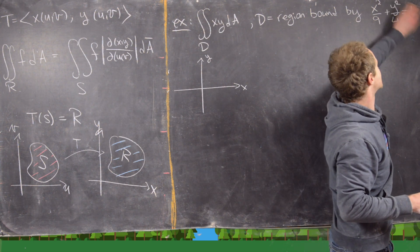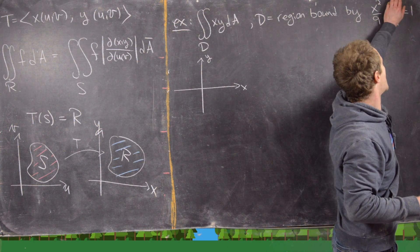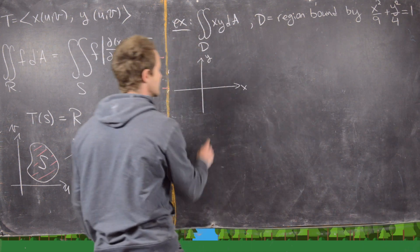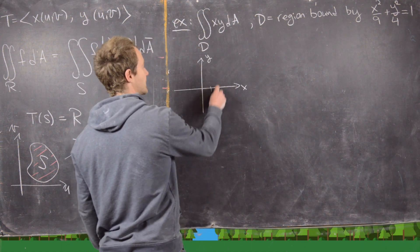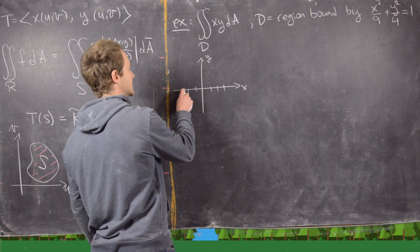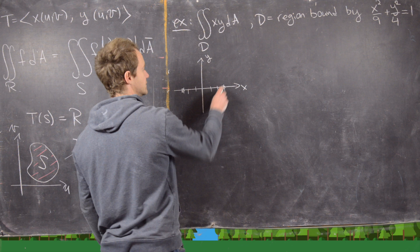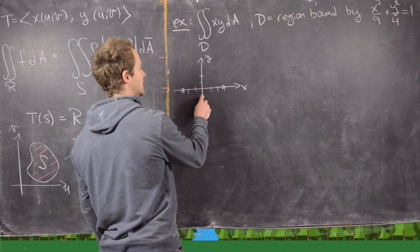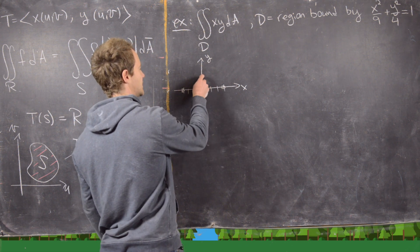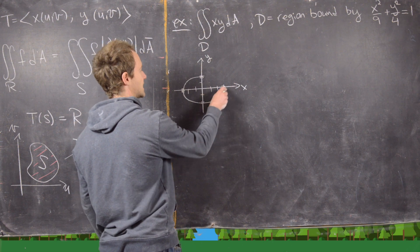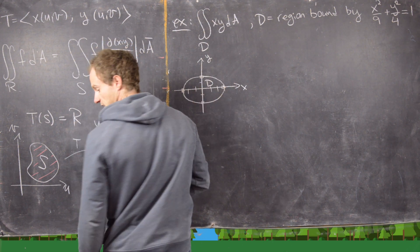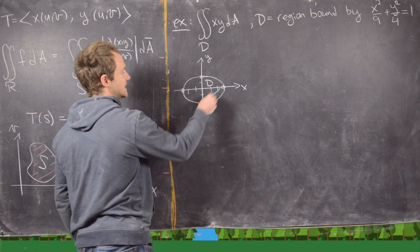This crosses the x-axis when y equals 0, if x is plus or minus 3, so here we put plus 3 and minus 3. Similarly, it goes through y equals plus or minus 2. So that gives us this region right here. This is our region D.